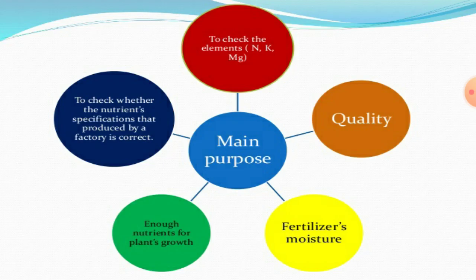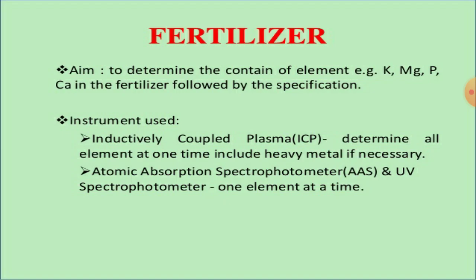The main purposes of fertilizer analysis are: to check the quality of the fertilizer, to verify moisture levels, to confirm that enough nutrients for plant growth are available in the fertilizer, to check whether the nutrient specifications produced by the factory are correct, and to check the elements — nitrogen, potassium, and magnesium — in the fertilizers.